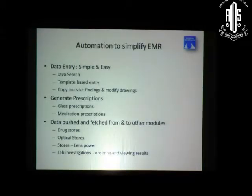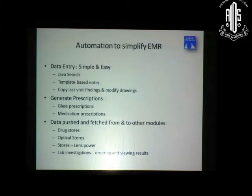We introduced something called Smart Text. People find it difficult to type, so with Smart Text, when writing an action plan, you can select from multiple pre-set items with a click — for example, 'cataract surgery advised when visually handicapped' and 'pros and cons of cataract surgery explained.' A ready-made smart text is incorporated and you only modify a few sentences, which is faster than typing full paragraphs. These things made documentation much faster.